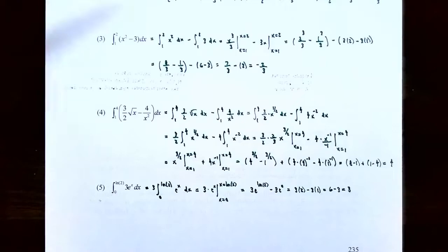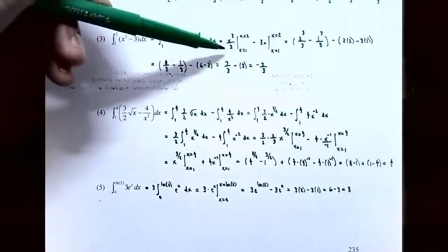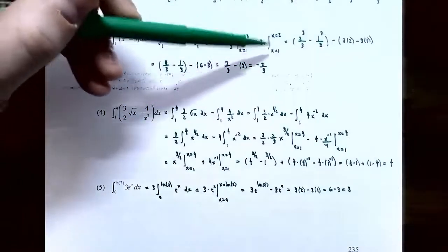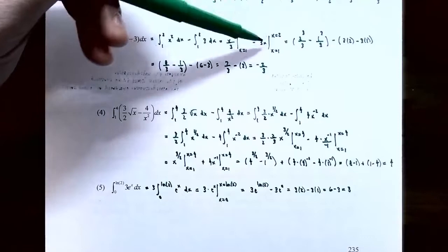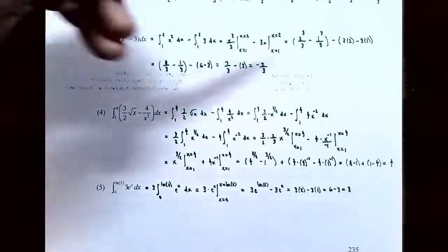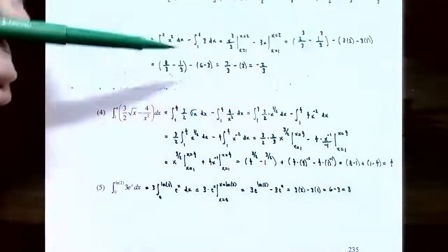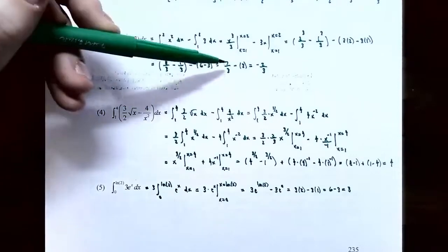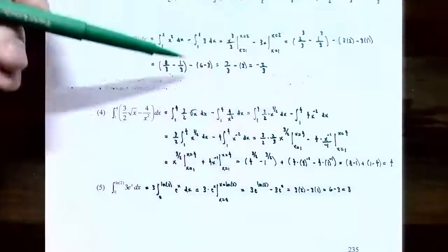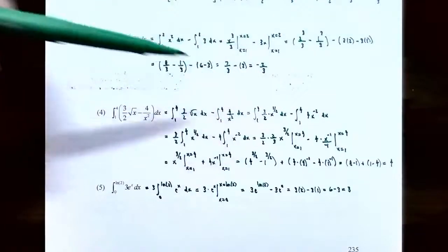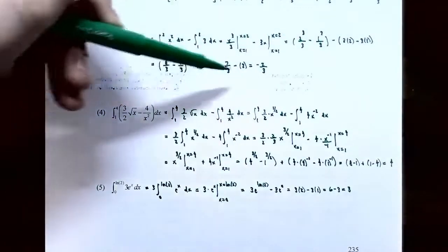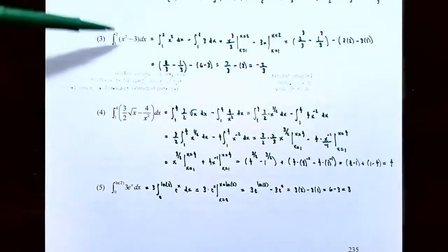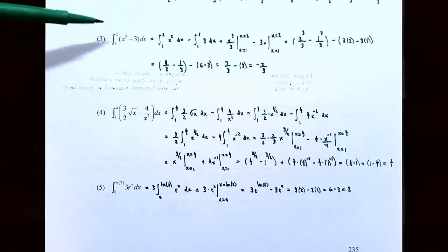Using the Fundamental Theorem: plug in x equals two first to get 2 cubed divided by 3, then subtract 1 cubed divided by 3. That gives 8 thirds minus 1 third, which is 7 thirds. For the second antiderivative: 3 times 2 minus 3 times 1 gives 6 minus 3, which is 3. So 7 thirds minus 3 gives negative 2 thirds. The area under the curve y equals x squared minus 3 from x equals one to x equals two is negative 2 thirds.